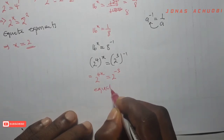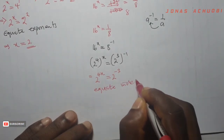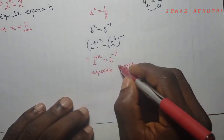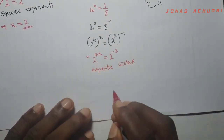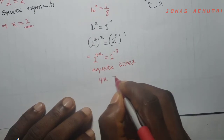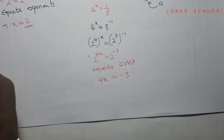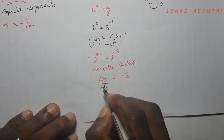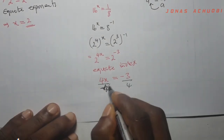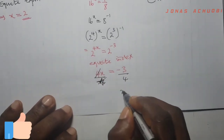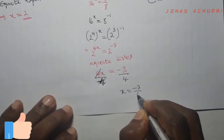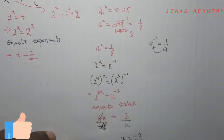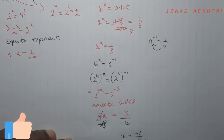Since the base on the left hand side is 2 and the right hand side is 2, it is now time to equate the powers. The power on the left hand side is 4x and the right hand side is negative 3. I want to find the value of x, so if I divide by 4, 4 will cancel and my x is left as negative 3 over 4. That's the value of x. So if we put negative 3 over 4 in place of x, we will get 0.125.